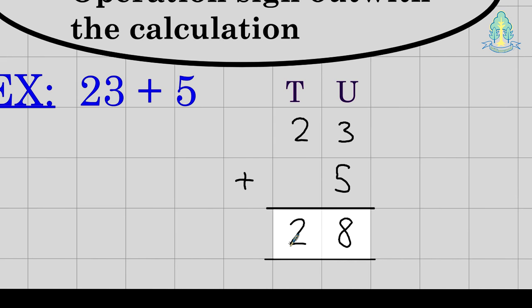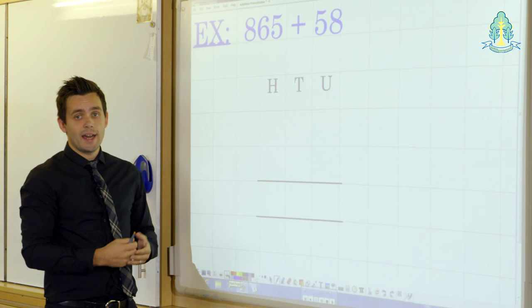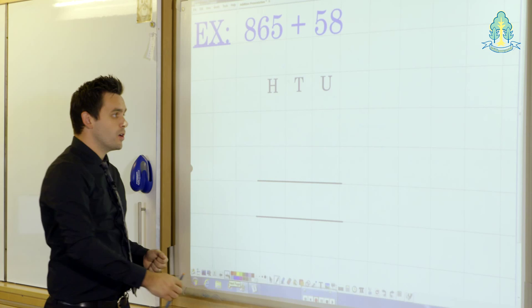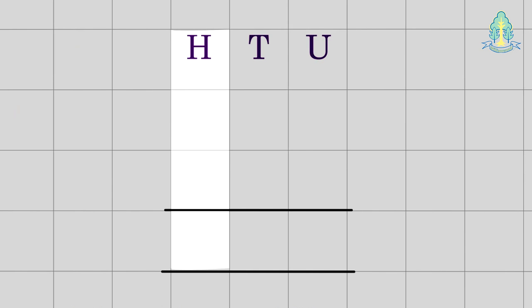Now, a more complicated example would be one that involves a carrying digit, something along the lines of this, eight hundred and sixty-five plus fifty-eight. Now, as before, we must align the numbers correctly. In this case, hundreds, tens and units, eight hundred and sixty-five. Keep the operation symbol out with the calculation, add on fifty-eight.